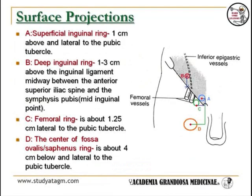The superficial inguinal ring is a gap in the external oblique aponeurosis located 1 cm above and lateral to the pubic tubercle. The deep inguinal ring is formed by the transverse fascia and is located 1 to 3 cm above the mid-inguinal point. The femoral ring is located about 1.25 cm lateral to the pubic tubercle.